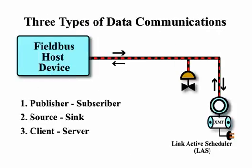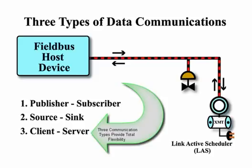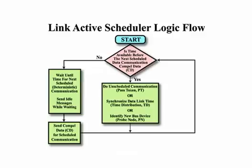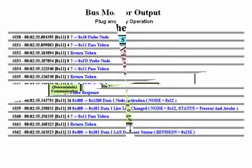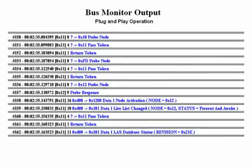Next is a very large section providing the most comprehensive coverage of Foundation Fieldbus communications currently available in any tutorial. You will gain a detailed understanding of the three different types of bus communications and their purpose. You will also learn the LinkActiveScheduler's token-passing algorithm and how it provides equal access to the bus for all field instrument communications. Plug-and-play operation, time synchronization, and many other communication topics are covered as well. We reinforce the learning process by showing and explaining actual Fieldbus communications captured using a bus monitor. These media clips show individual data packets and explain their content to ensure your understanding of bus communications.